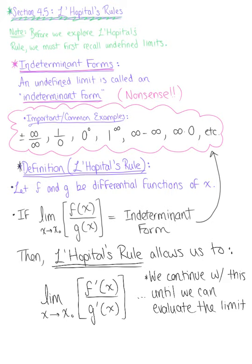We have our two conditions here. If the limit equals one of the indeterminate forms, then L'Hôpital's Rule allows us to take the derivative of the numerator over the derivative of the denominator, and continue to apply this method until we can evaluate the limit.